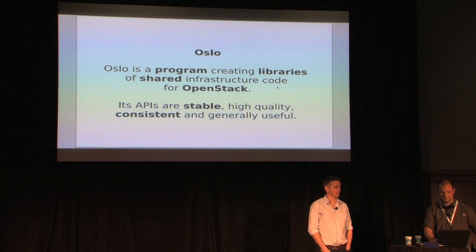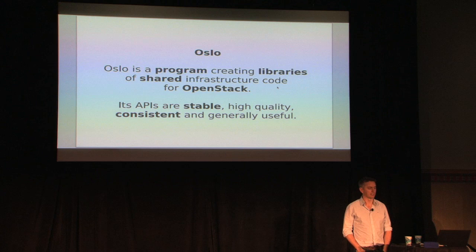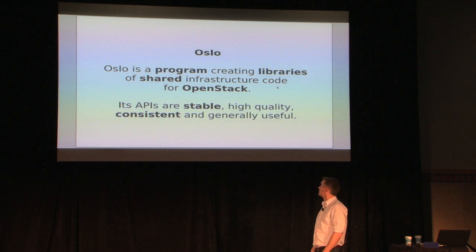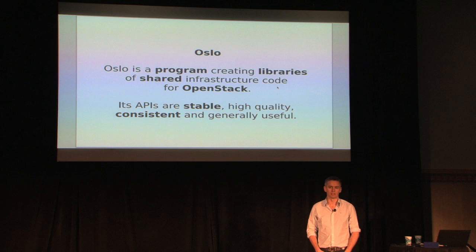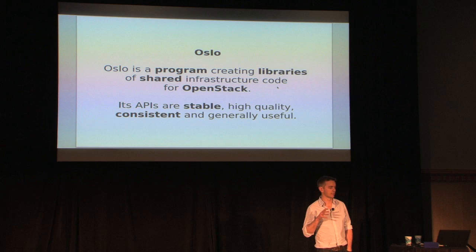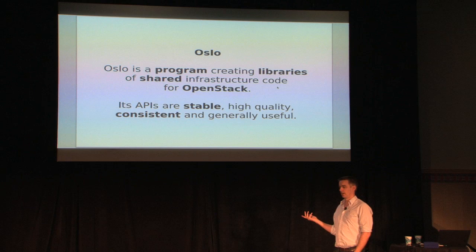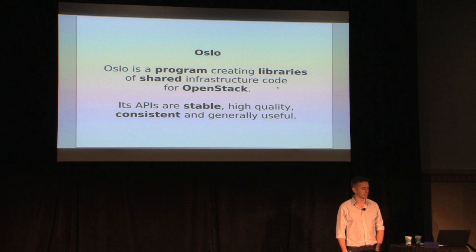This is how I describe Oslo — the mandate for Oslo. It's a program — we're starting to call it a program now instead of a project, and I'll explain that. To create Python libraries of shared infrastructure code for OpenStack, aiming to have stable APIs that are high quality, consistent, and generally useful. The 'stable' aspect is probably the most important — it's influenced how we're trying to build things. Basically, we're trying to create a bunch of libraries that all of the OpenStack services can use for implementing stuff like REST APIs, reading configuration files, logging — all the basics of implementing an OpenStack service.